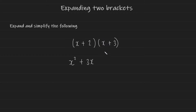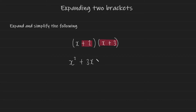For the second part, you're going to go back to the first bracket and take the second term this time, include its symbol. So we're going to go to this plus 2 over here. And you're going to take that and multiply it by everything in the second bracket, which is exactly what we did for the first step.